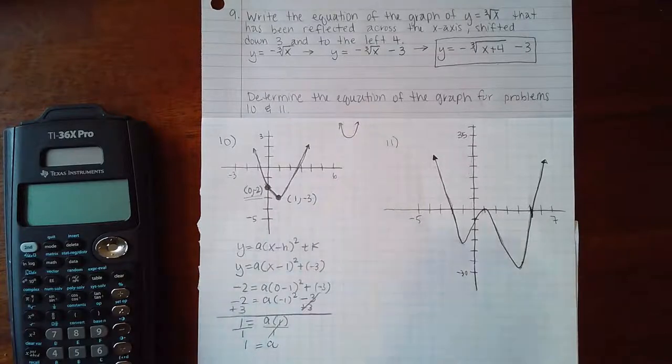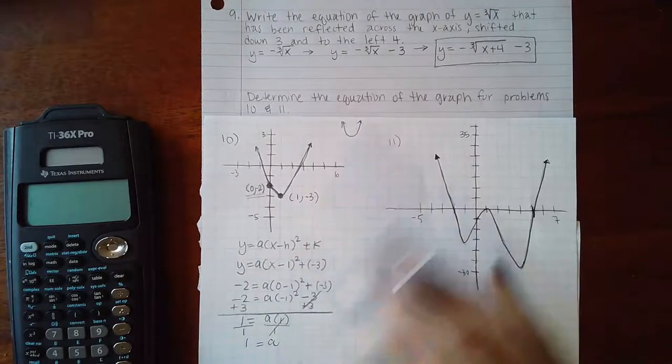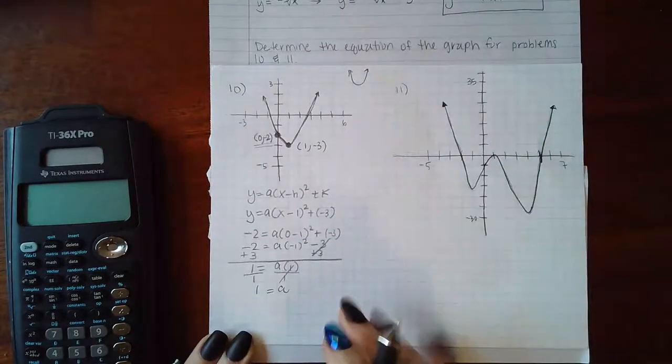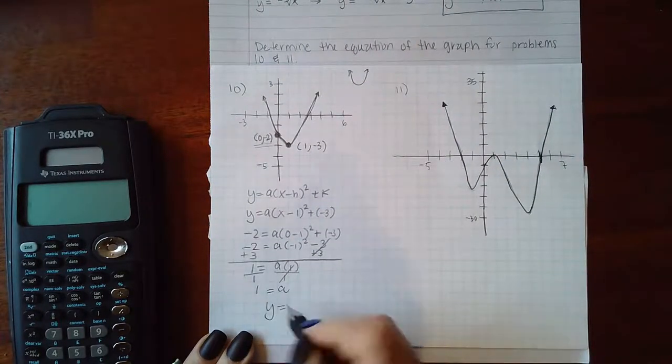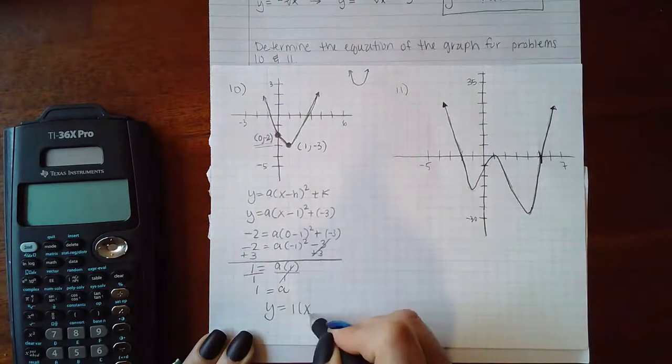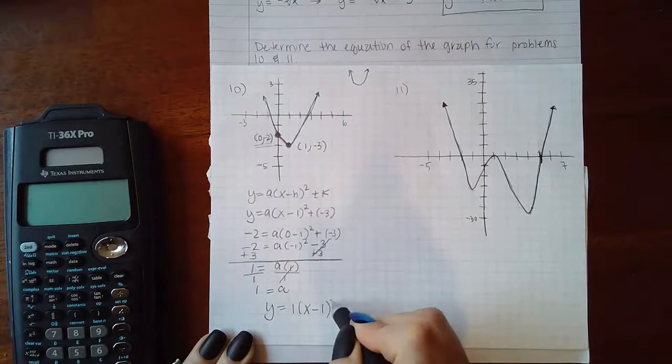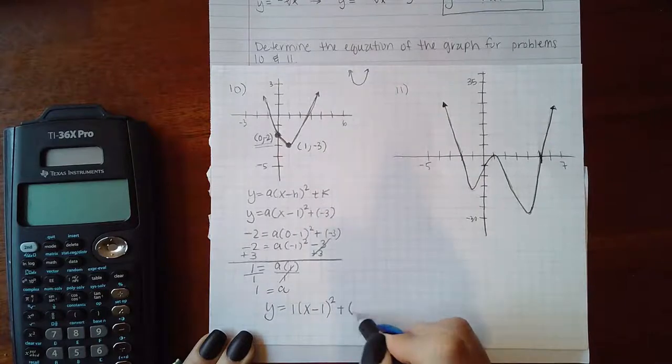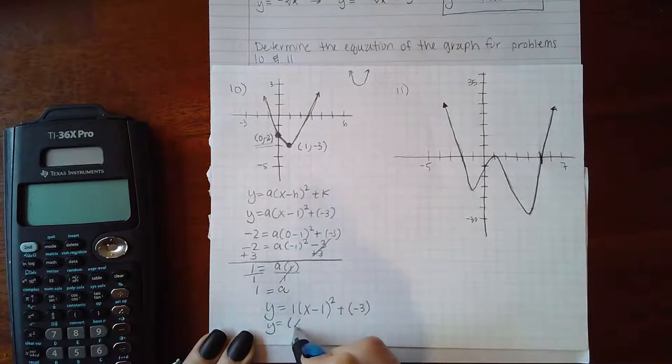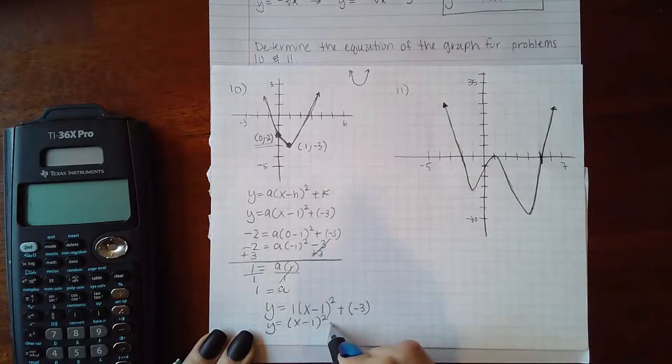Now I can give the equation of this parabola. It's going to be y equals a is 1, x minus h which is 1 squared, plus k which is negative 3. If I want to clean that up, it's just going to be x minus 1 squared minus 3.